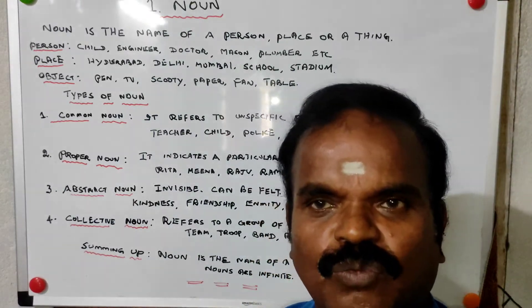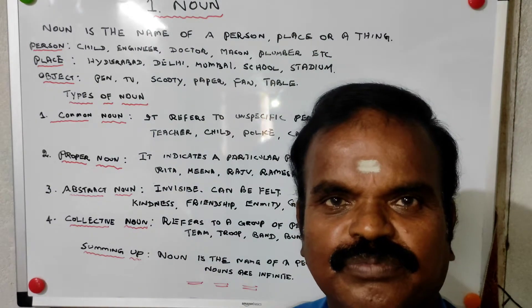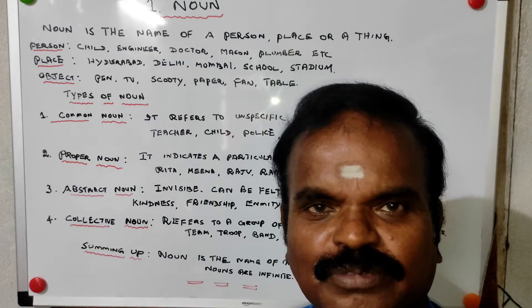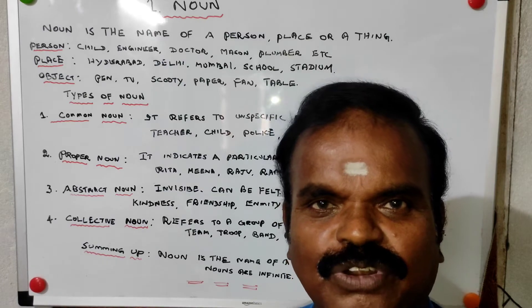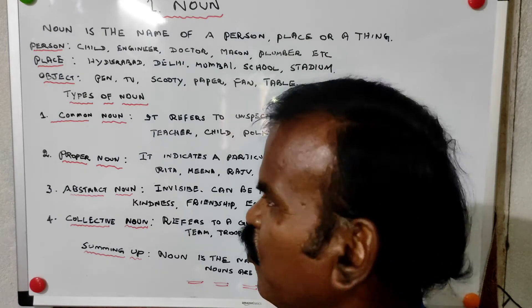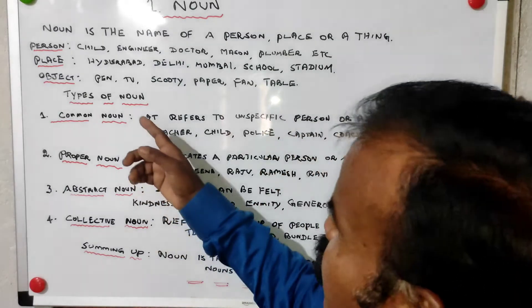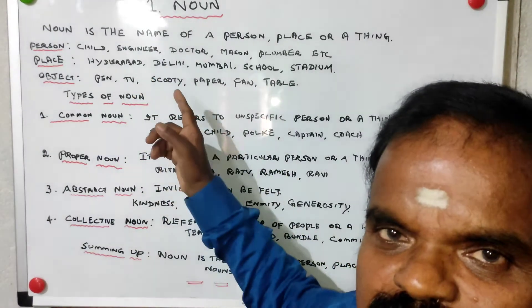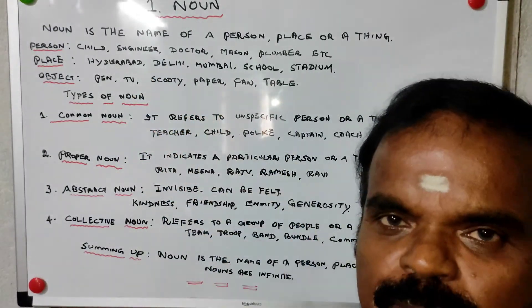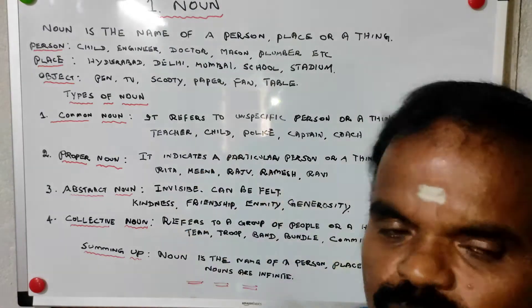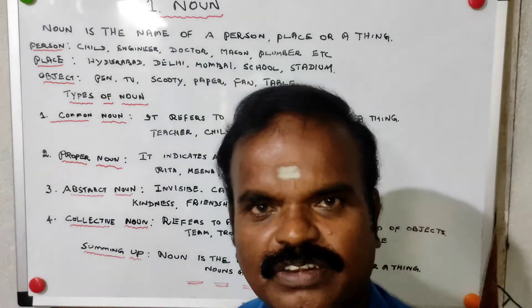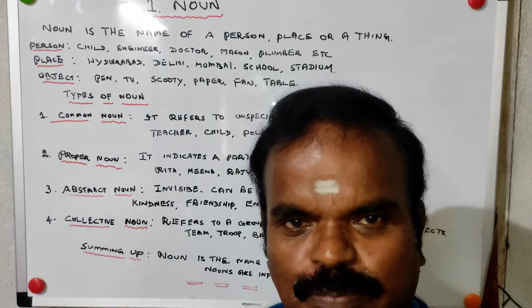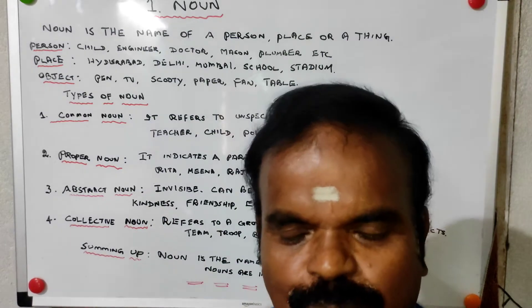Simply look around your room: fan, door, window. Some words are on the blackboard: pen, TV, scooty, paper, fan, table, dress, pocket. The list is endless.